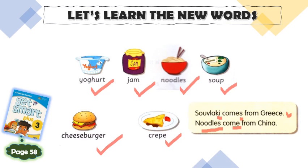Souvlaki comes from Greece. Noodles come from China. For singular subject, we add S for the verb. But for plural subject, we don't add anything — we use the base form.